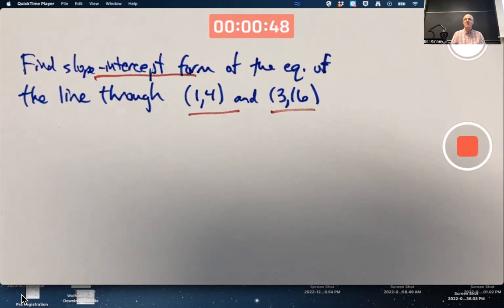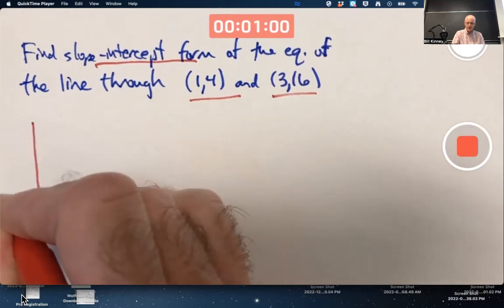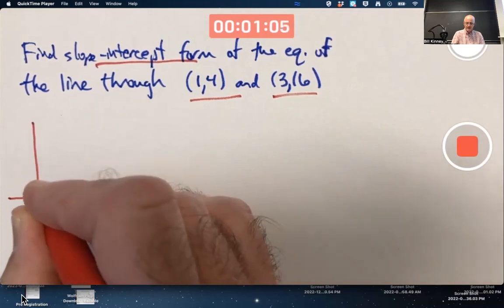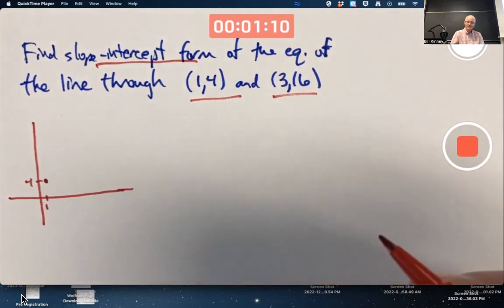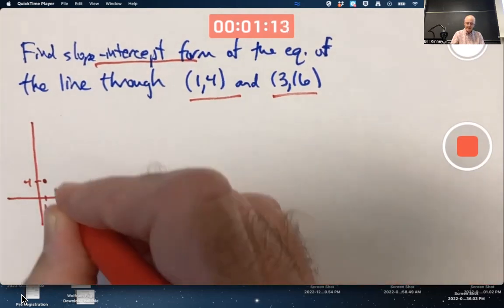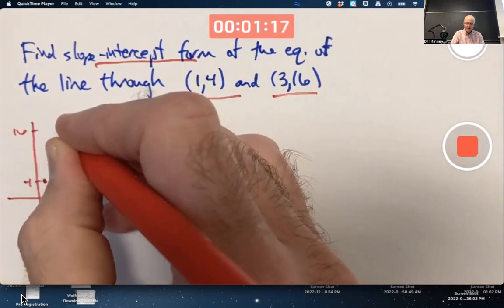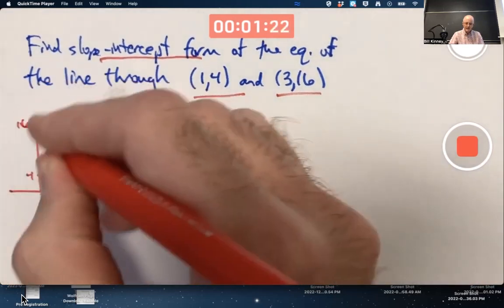It is a good idea when trying to solve a problem like this to make a quick sketch of the graph to get a feel for what kind of thing to expect. The graph doesn't have to be perfect. 1,4 would be that point right there, and 3,16 is approximately right here. You're trying to connect those dots with a straight line and find its equation.